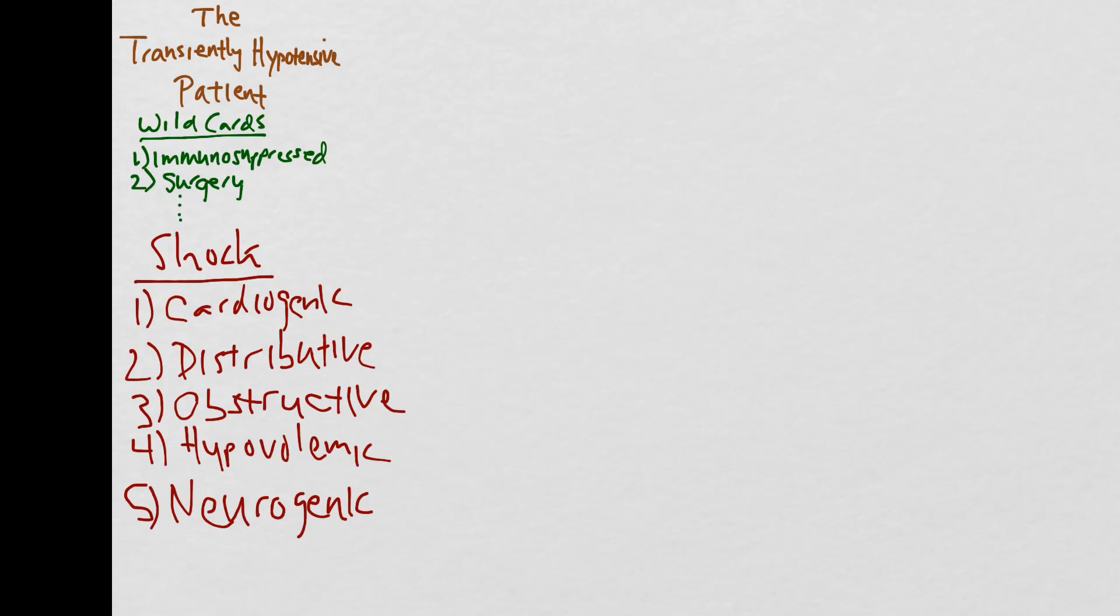Now that you have your differential, you can now focus your history and physical on these five different etiologies of shock. You'll remember to ask if the patient has had any chest pain, dyspnea on exertion, or PND. You'll ask the patient if they've had any dysuria, hematuria, a productive cough, or any new rash.